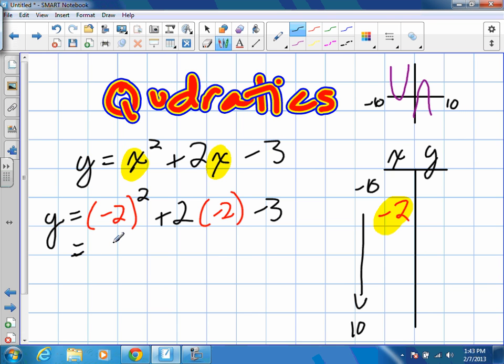Negative 2 squared is going to be positive 4. Negative 2 times negative 2 is a positive value. Positive 2 times negative 2 will give us negative 4 minus 3. Worked out great. Our value is 3. So, that's great. We know negative 2 and 3 will fall on the graph.